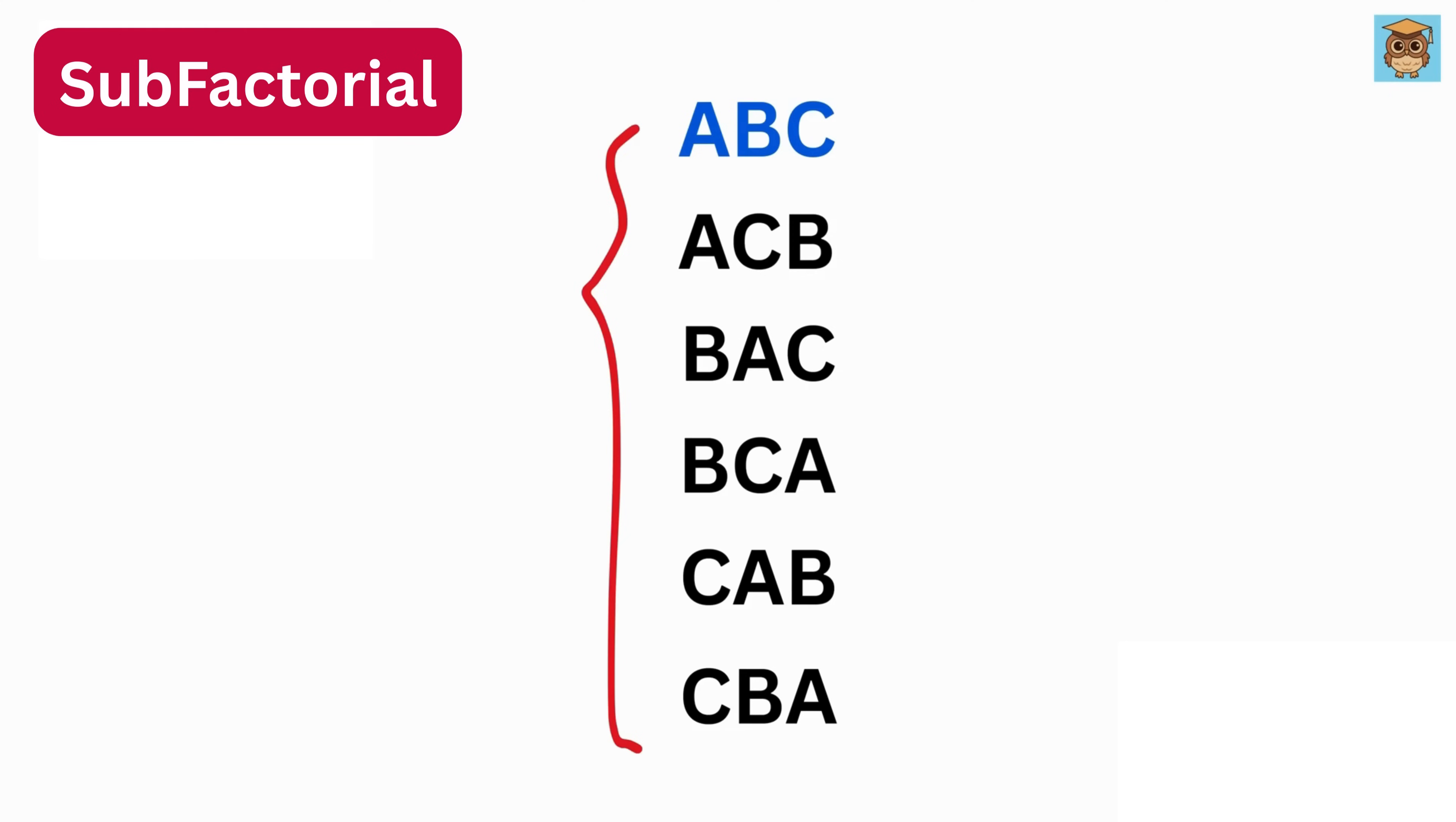Now from these six possible arrangements, remove all the A from the first position, which means this and this will get cancelled out. Now remove all the B from the second position, which means this and this will get cancelled out.